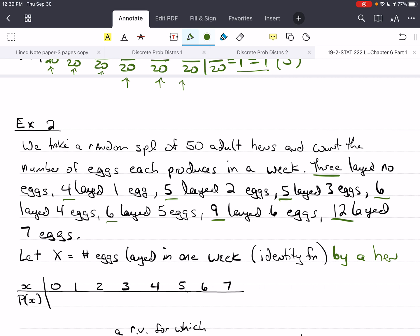I know that there's going to be 50 hens, so each of these numbers, the denominator is 50. No eggs is the same as 0 eggs, and 3 hens out of 50 did that. 4 laid 1 egg, so 4 out of 50. 5 had 2 eggs, 5 of them had 3 eggs, 6 of them had 4, another 6 had 5, 9 laid 6 eggs, and 12 laid 7 eggs. If I totaled this up, sure enough, I get 50 over 50, so this is 1, and again, this is the probability of the entire sample space.